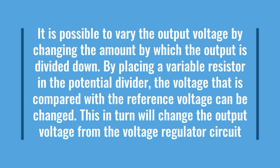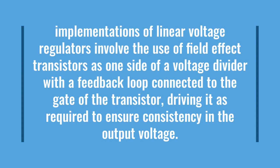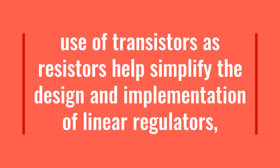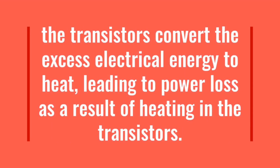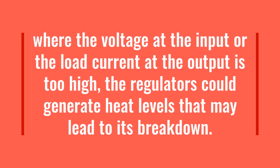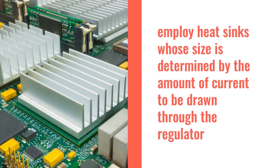Changing the potential divider will change the output voltage from the regulator circuit. Typical implementations use field effect transistors as one side of a voltage divider with a feedback loop connected to the gate of the transistor, driving it to ensure consistency in the output voltage. While this use of transistors as resistors helps simplify the design of linear regulators, it contributes largely to their inefficiency, as the transistors convert excess electrical energy to heat, leading to power loss.